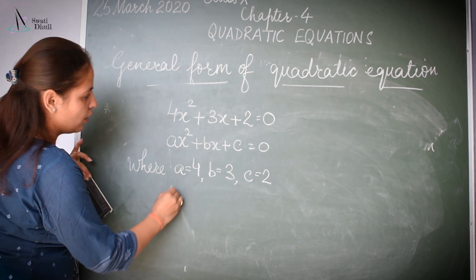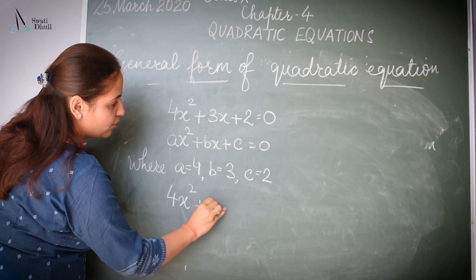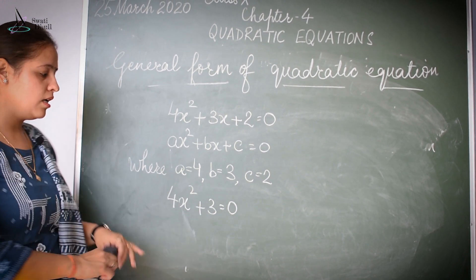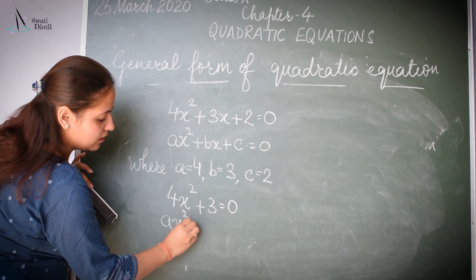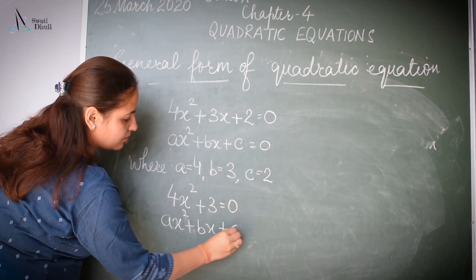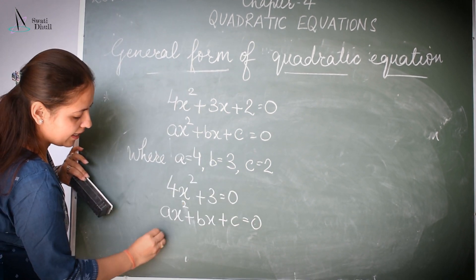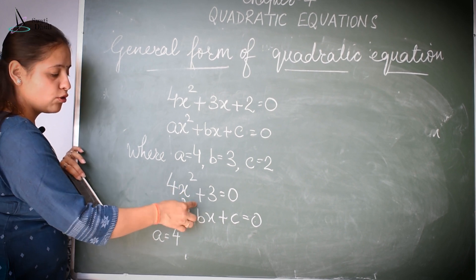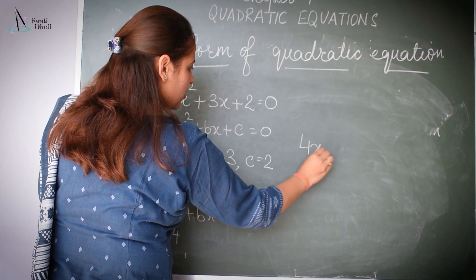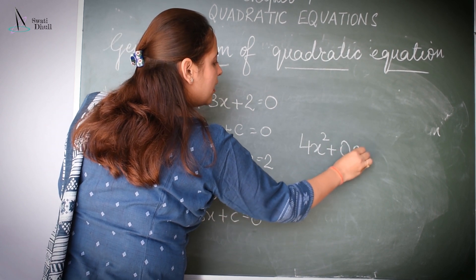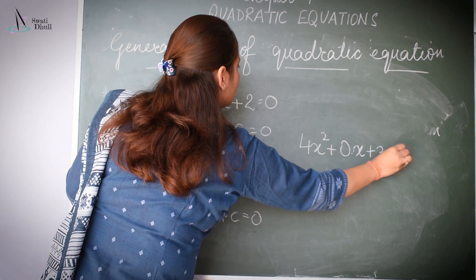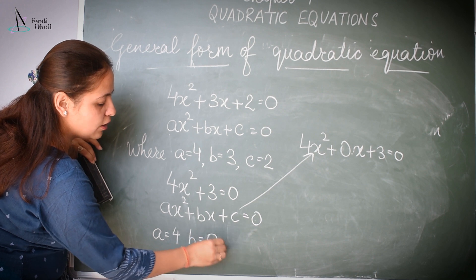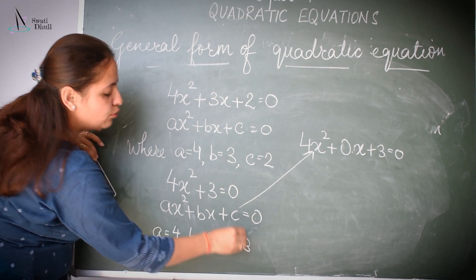Now if I say 4X² + 3 = 0, this is again a form of quadratic equation. When you compare it with the general form, you get A = 4. There is no term which contains a variable X, so I can write this equation as 4X² + 0·X + 3 = 0. Comparing the two equations, you get B = 0 and C = 3.